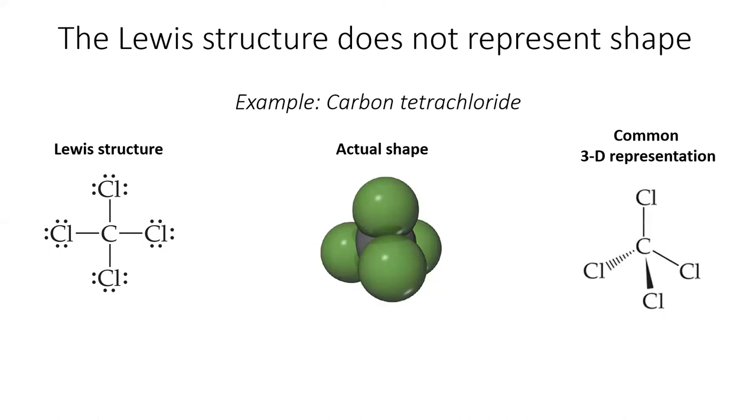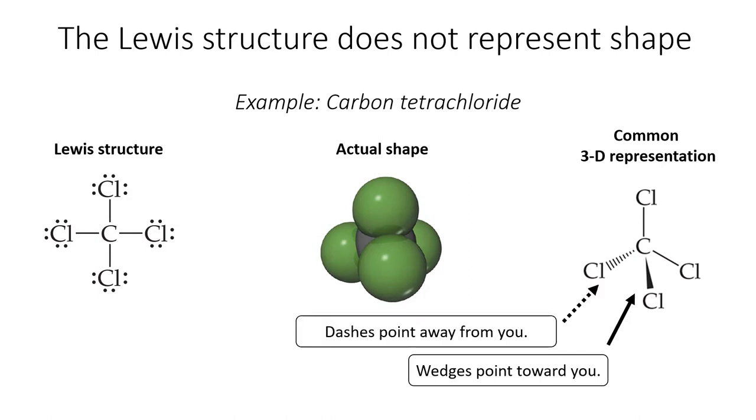Because it's hard to draw in 3D, chemists have a way to represent 3D structures using wedges and dashes to indicate its dimensionality. Imagine the thick wedges are coming out of the screen toward you, and the dashed lines are going away from you into the screen.